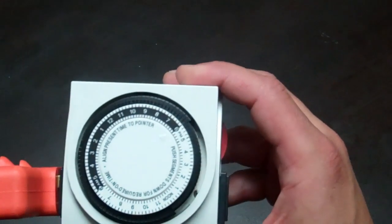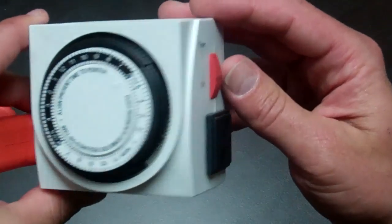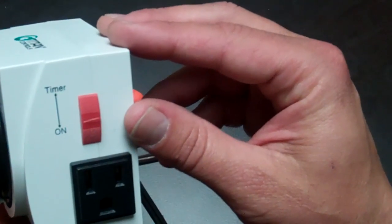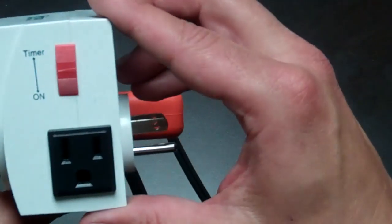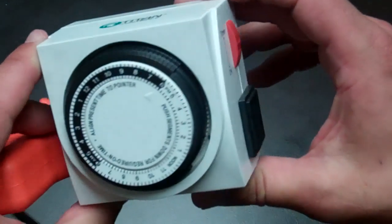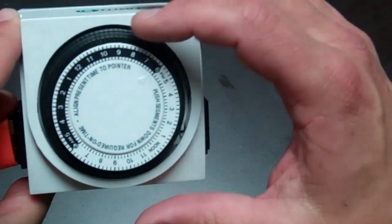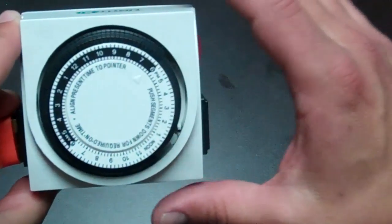Now what we want to do is engage the timer. If you're looking at it here, when it's set to timer, that means the timer is engaged. That means it will actually work on this lighting schedule.